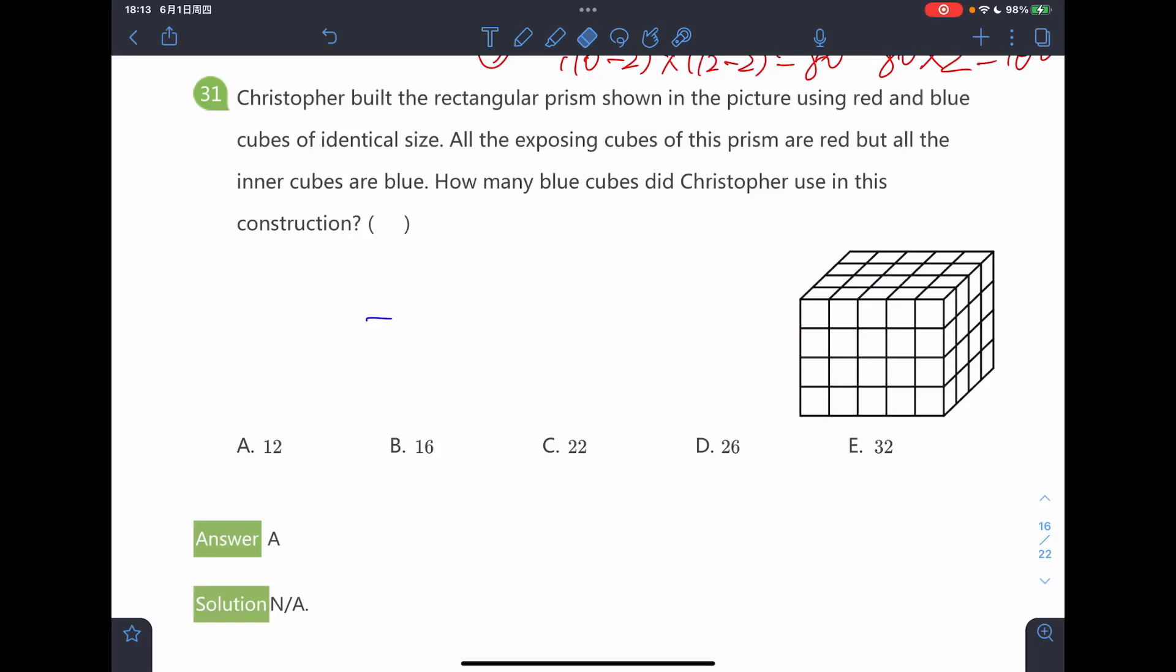Christopher built the rectangular prism shown in the picture using red and blue cubes of identical size. All the exposing cubes of this prism are red, but all the inner cubes are blue. How many blue cubes did Christopher use in this construction?